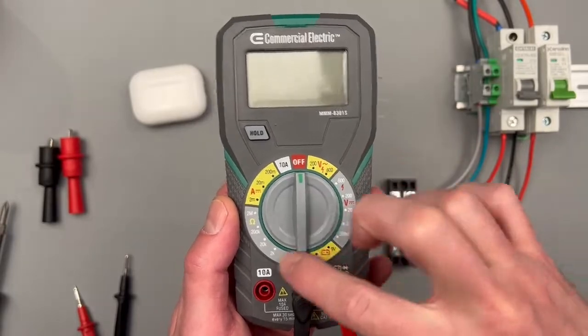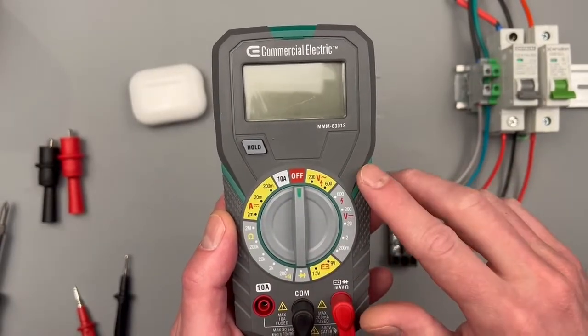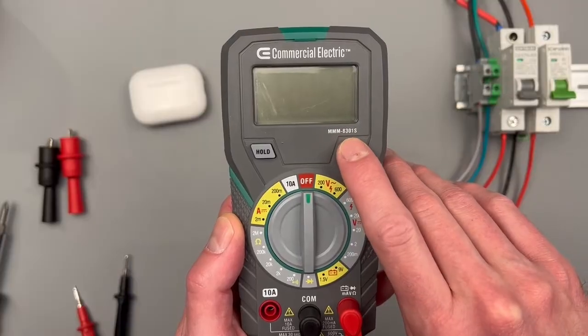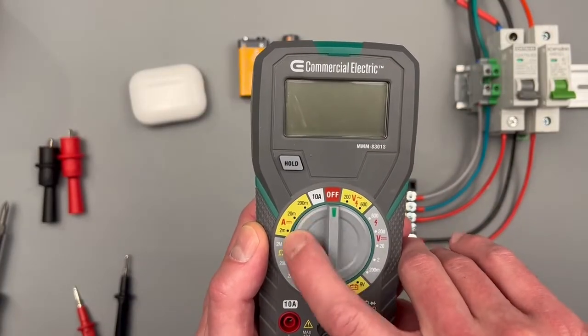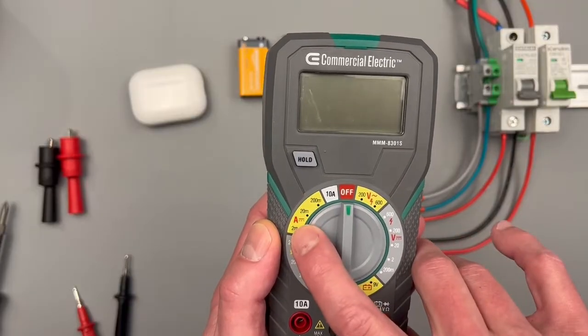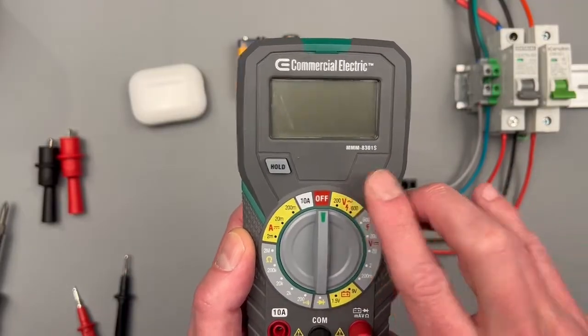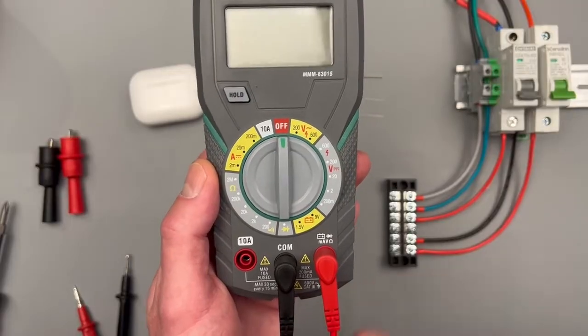All right, today we're going to be going through all of these test settings for this Commercial Electric MMM 8301S. The only one I don't have a good demonstration for is the milliamps for DC current, but all the rest I'll be able to show you. Go ahead and take note of my port position for my test leads.